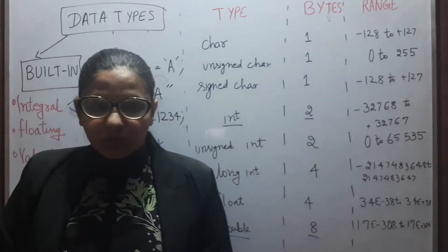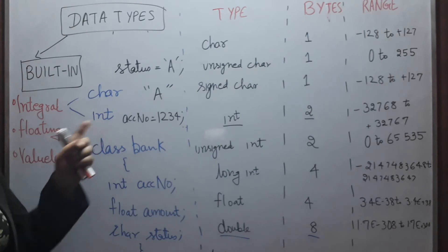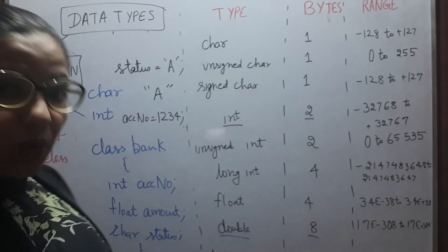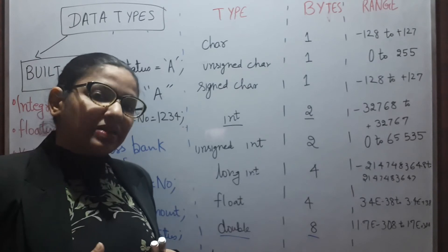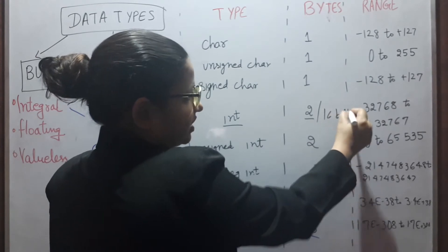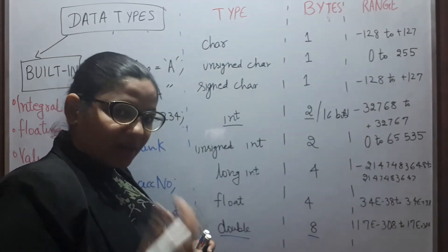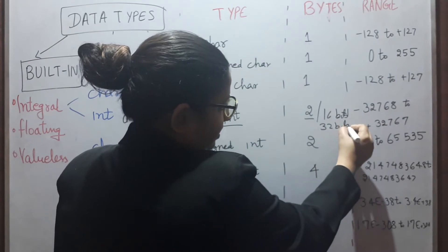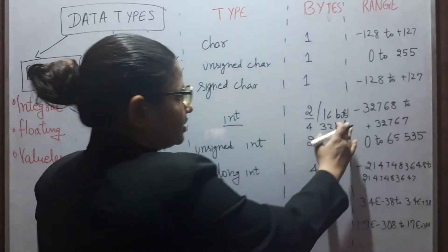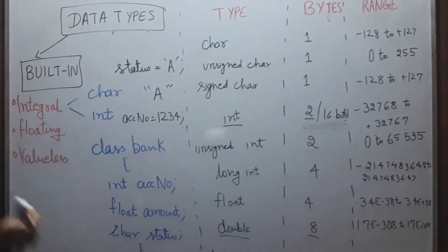Basically, there is one basic rule with integer data type. And that rule is, integers will generally correspond to the natural size of a word on the host computer. That means, if the host computer is of 16 bits, then our integer is also of 16 bits. If the host computer word size is 32 bits, then our integer becomes 4 bytes or 32 bits.